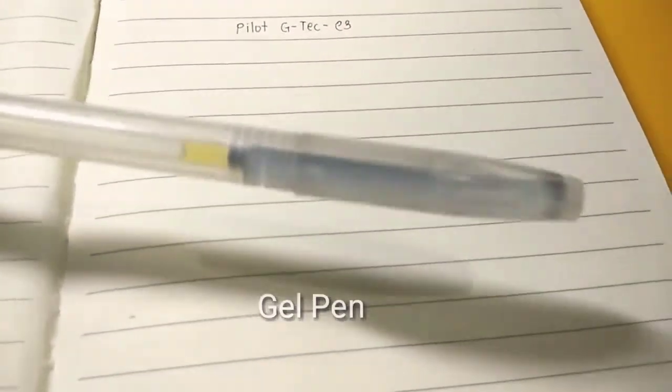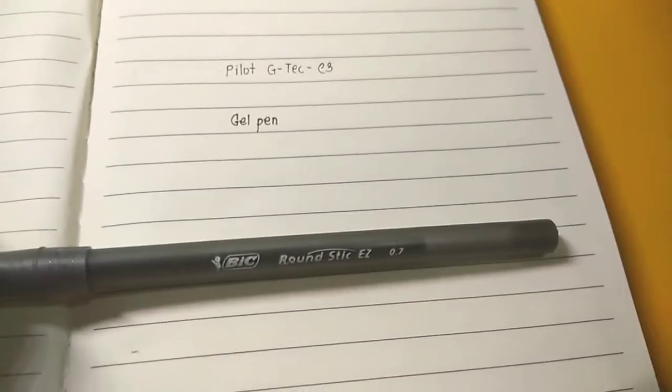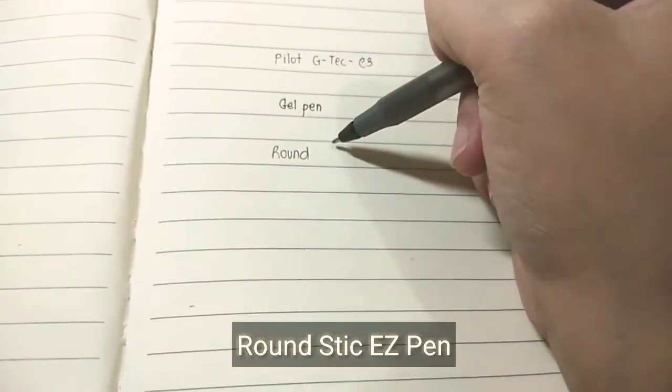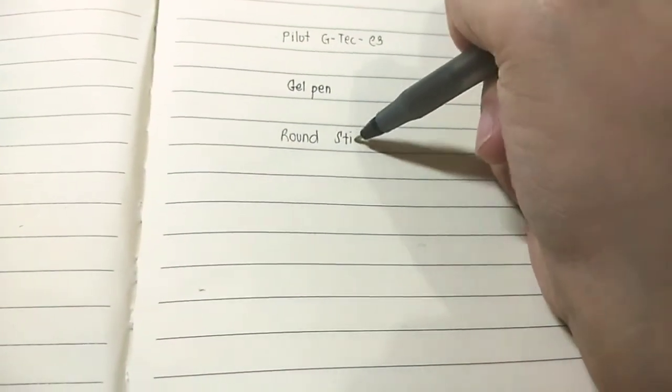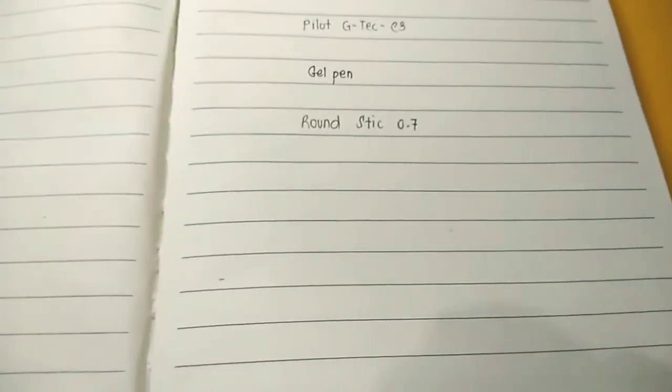Next is this gel pen that I don't really know what's the brand and where can I pop it if it's already empty. Next is this big, big round stick 0.7 ball pen. It is an ordinary black ball pen that I bought.